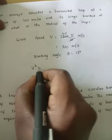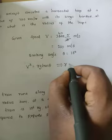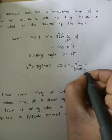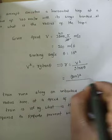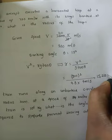We already derived the expression: v² = r·g·tan(θ). We need to find r. So r = v²/(g·tan θ) = 200² / (9.8 × tan 15°) = 15,232 meters, which is 15.232 kilometers. This is the radius of the loop in which the aircraft must travel to remain in equilibrium.